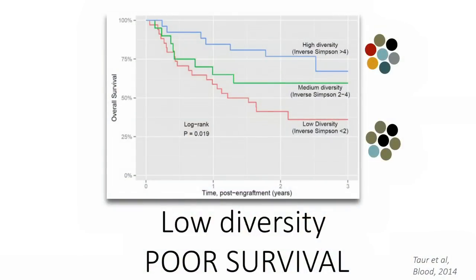This is an opportunity for intervention. We know that low gut microbiota diversity in this patient population is related to poor survival. This lovely work from Memorial Sloan Kettering by Eric Pamer's group took transplant patients, collected stool, and sequenced it using 16S sequencing. They categorized microbiota into high, medium, and low diversity. In this Kaplan-Meier curve, one of the strongest predictors of all-cause mortality was having low gut microbiota diversity at engraftment — that red line. Even high-diversity patients show survival below 75% at three years. If we could move people from the red line to the blue line, we'd save a lot of lives.